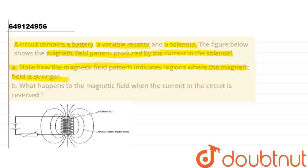So first we have to identify where the magnetic field is stronger. This is a battery, whose positive terminal is here and negative terminal is here. This is the resistor, and its combination is connected to the solenoid. Let us first understand what a solenoid is. If we twist a wire to create a helical structure, that is called a solenoid.